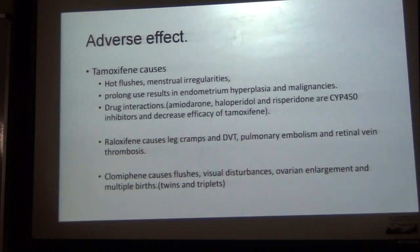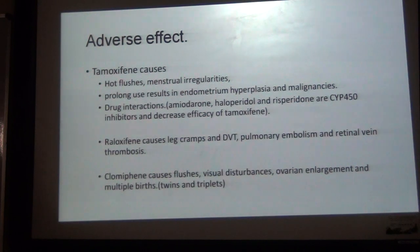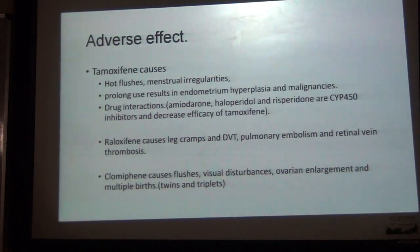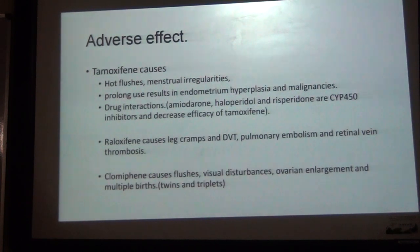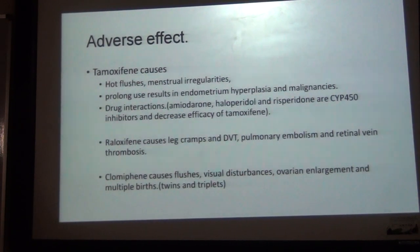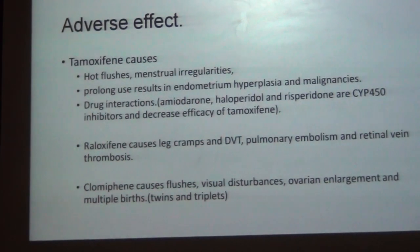Adverse effects: Tamoxifen causes hot flushes, menstrual irregularities, and prolonged use results in endometrial hyperplasia and malignancies. Tamoxifen has drug interactions — if given with amiodarone, haloperidol, or other CYP450 inhibitors, it decreases the efficacy of tamoxifen. Tamoxifen also causes leg cramps, DVT, pulmonary embolism, and retinal vein thrombosis. Clomiphene causes hot flushes, visual disturbances, ovarian enlargement, and multiple births such as twins and triplets.